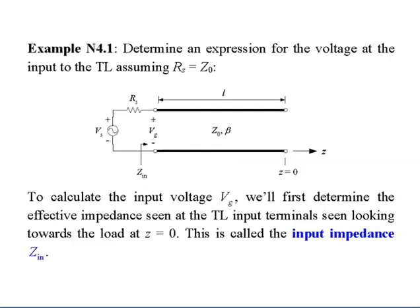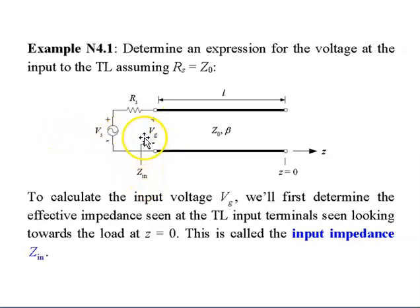The input impedance. To determine an expression for the voltage at the input to the transmission line, assuming that RS is equal to Z0, refer to the figure. In order to find the input voltage VG, we first have to determine the effective impedance seen at the transmission line input terminal, looking towards the load. This is called the input impedance, denoted by Zin.